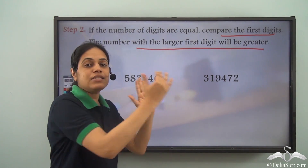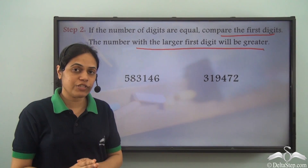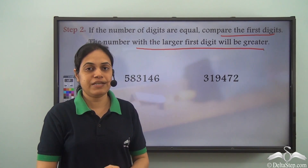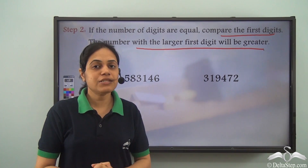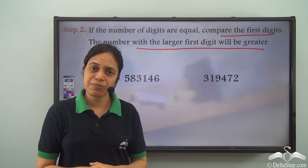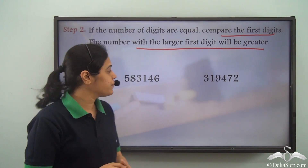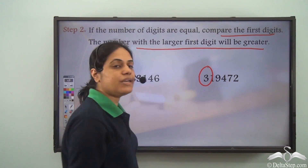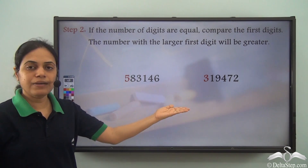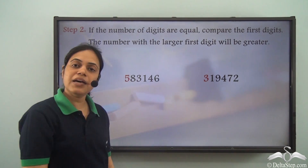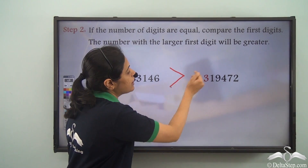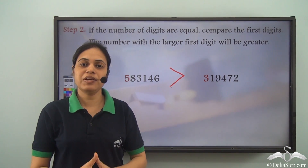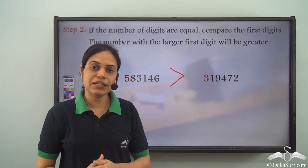The two numbers have an equal number of digits — six digits each. So I need to compare the digits in the first place. The digit in the first place is five here and three here. Since five is greater than three, this number will be greater than the other. Just by comparing the digits in the first place, I can say that this number is greater.